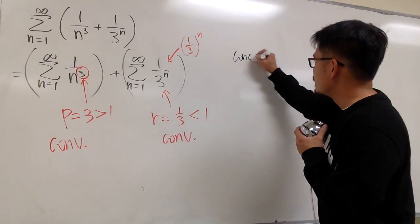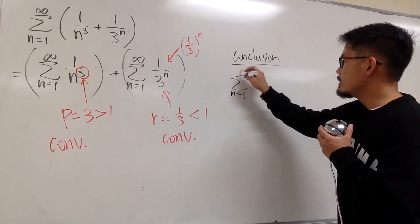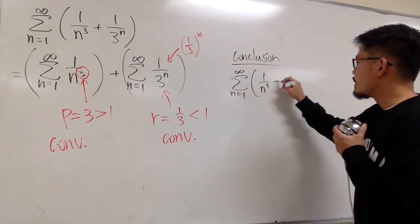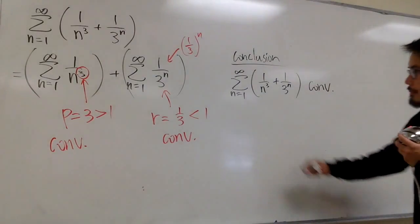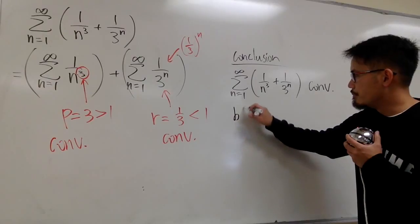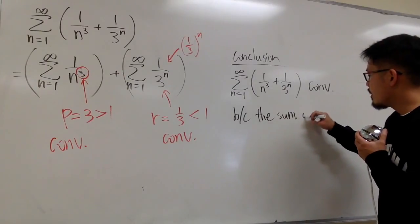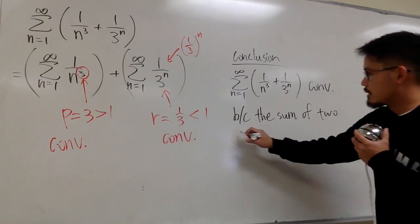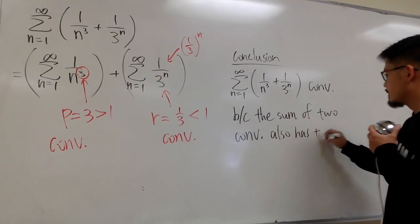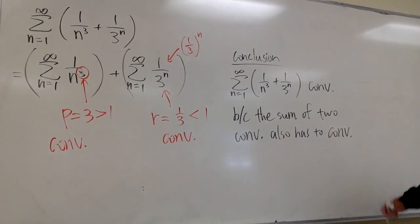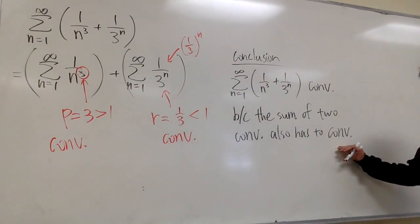So here is the conclusion. The original sigma when n goes from 1 to infinity, 1 over n to the 3rd power plus 1 over 3 to the n, this converges because the sum of two convergent series also has to converge. That's it.